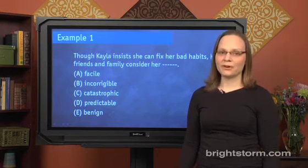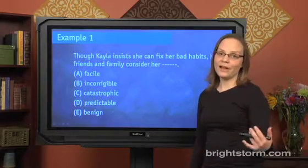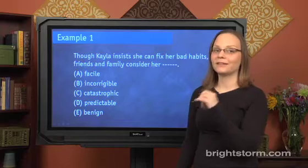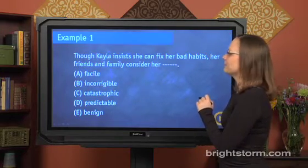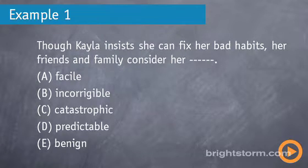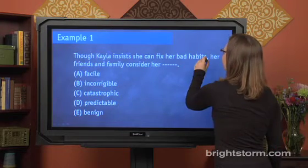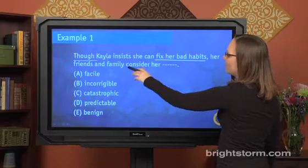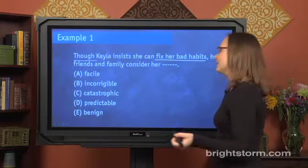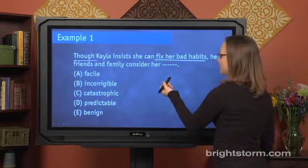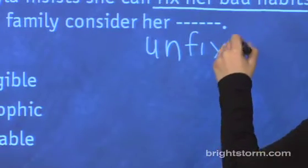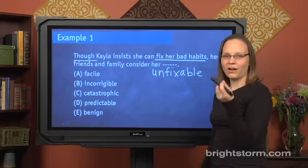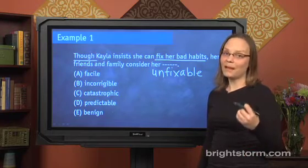Here's our first of many examples. Remember, we still have to go through the first two steps — looking for clues and capturing the concept — before moving on to step three. Looking for clues: 'Though Kayla insists she can fix her bad habits, her friends and family consider her blank.' The clues are 'fix her bad habits' and the word 'though,' which suggests a contrast. So you need to capture the concept — something like 'unfixable' or 'beyond help.' Not necessarily the right answer word, but it has the right flavor. With that, move on to picking the best match.